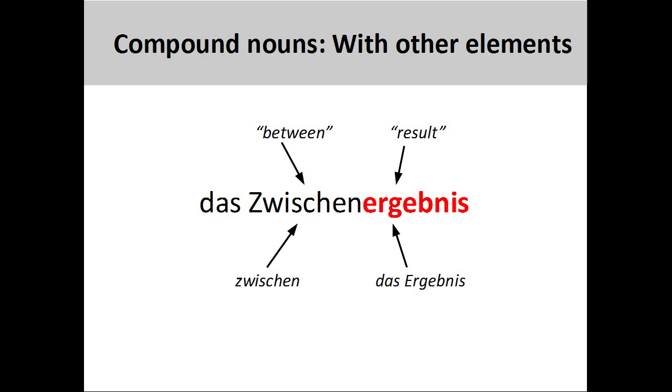The compound noun you see on the screen, das Zwischenergebnis, interim result, is comprised of the two-way preposition zwischen, between, and the neuter noun das Ergebnis, result.